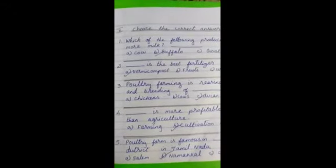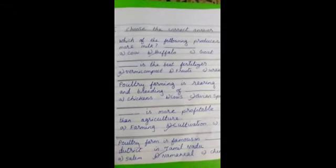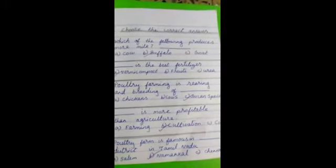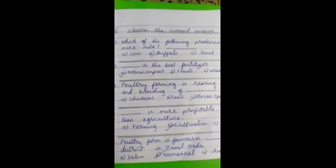And comes to the second one. Dash is the best fertilizer. Option A, vermicompost. Option B, fruits. Option C, urea. Answer is A. Put a tick in the A.